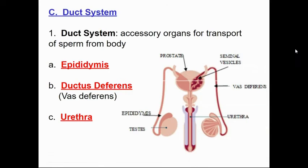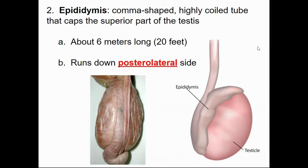Now that sperm has been produced, it needs to be transported through a duct system: from the testis to the epididymis, to the ductus deferens (also called the vas deferens), and then into the urethra to potentially leave the body. The epididymis is a comma-shaped, highly coiled tubule — if you could stretch it out, it would be 20 feet long — running posterior laterally to the testis.